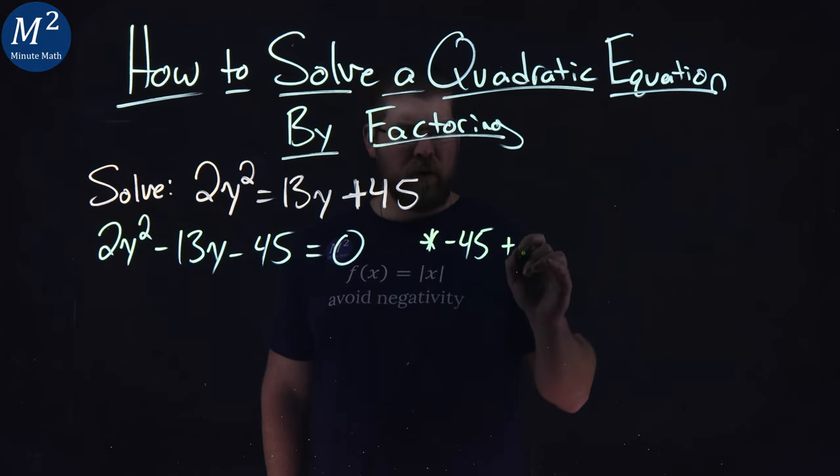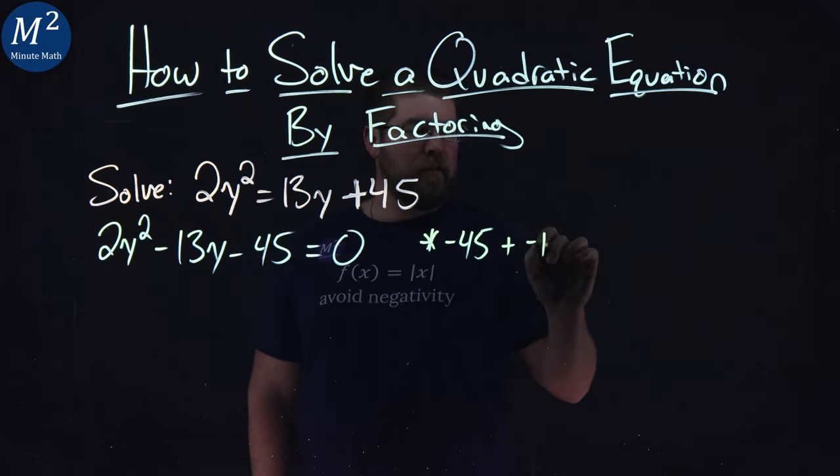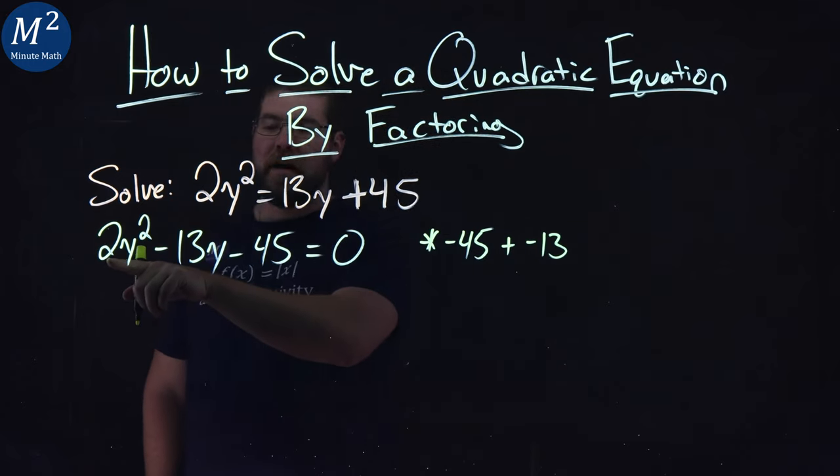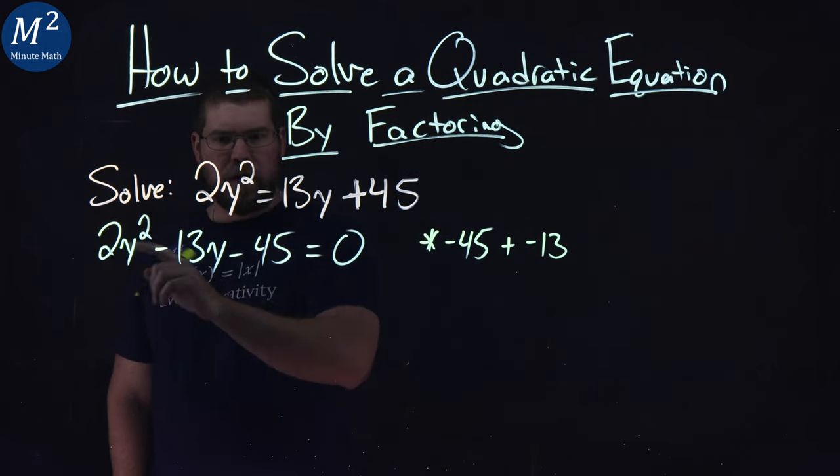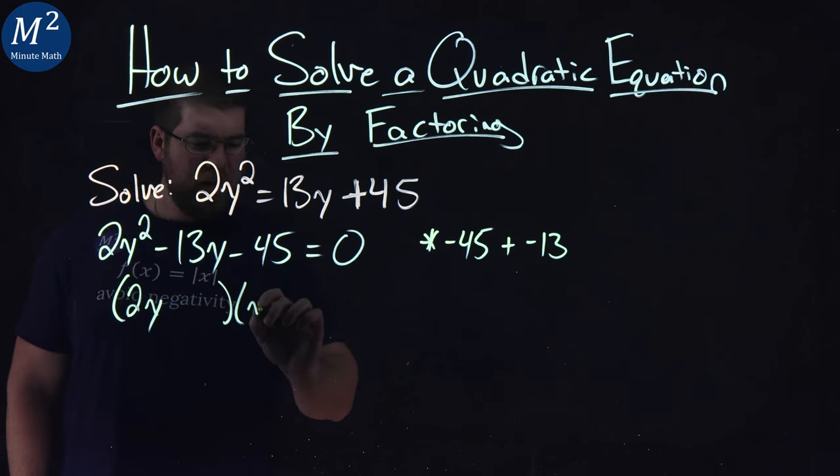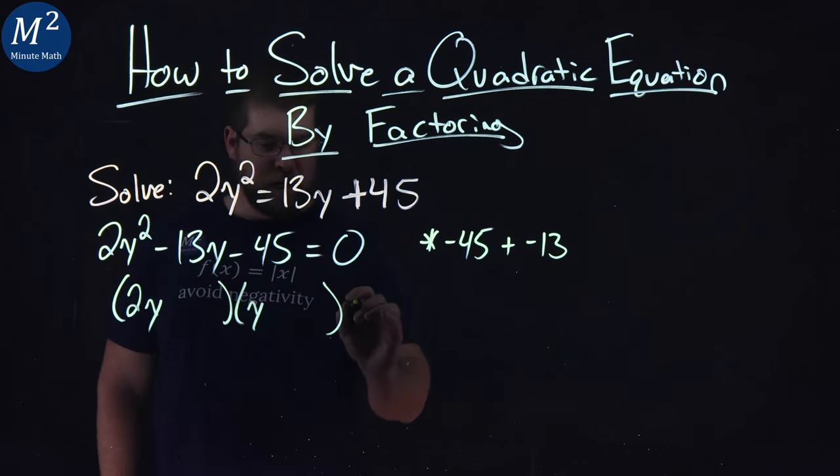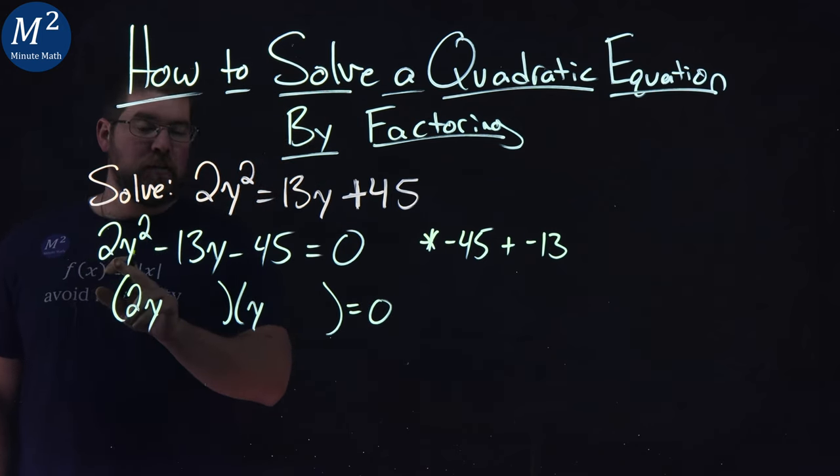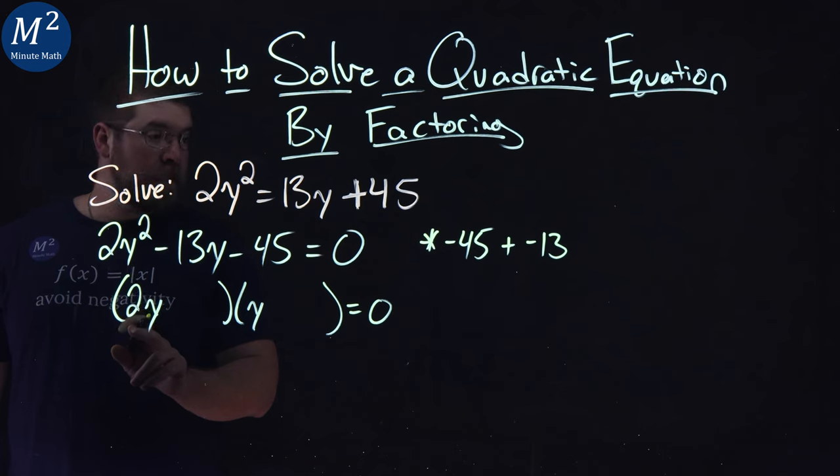When I add the two numbers, they have to be negative 13, but one is multiplied by 2. So when I break this out, it's going to be 2y like this and 1y as such. 2y times y is my 2y squared. That's why we have to have it like this.